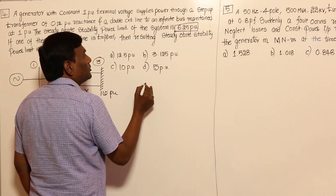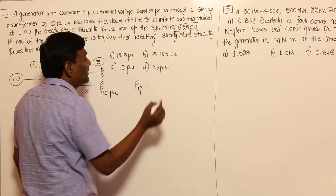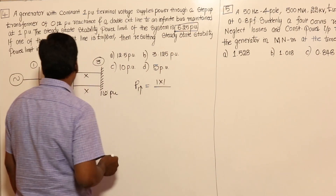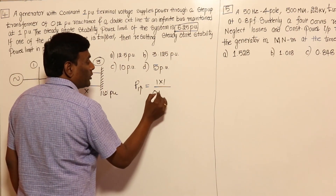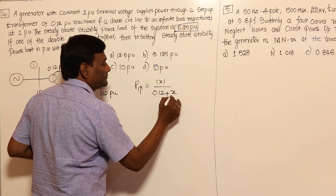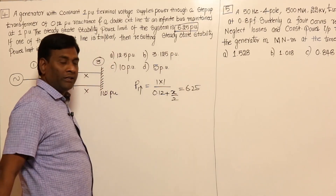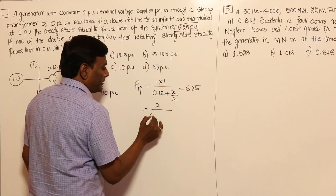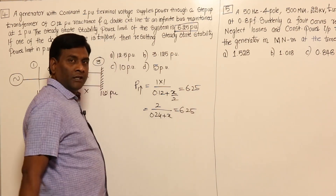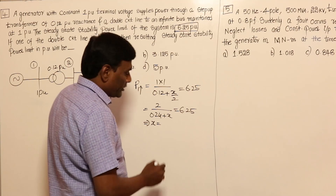They did not give X directly, so let us calculate X. P1_max = V1×V2 / (0.12 + X/2) = 1×1 / (0.12 + X/2) = 6.25. So 1 / (0.12 + X/2) = 6.25, giving 0.24 + X = 2/6.25. Solving, I got X = 0.08 per unit.